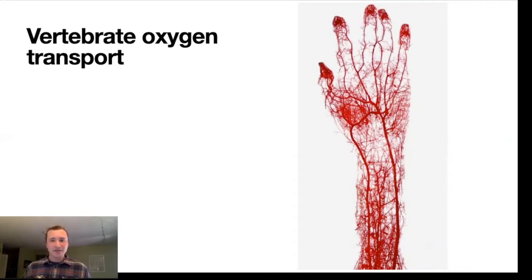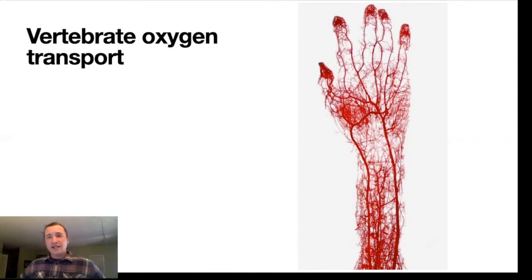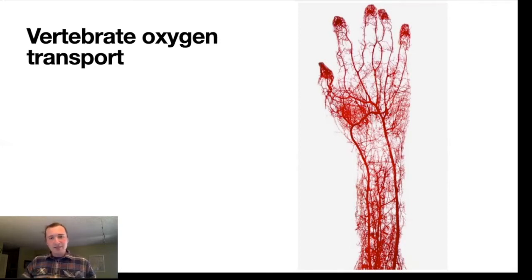Cells need to perform cellular maintenance and do the work of cells constantly. Insects and vertebrates both accomplish the task of getting oxygen to their cells, but they have different solutions. As a vertebrate, when we take in air into our lungs, we are bringing oxygen into contact with red blood cells. That oxygen is absorbed onto the red blood cells, binds to hemoglobin, and then our heart pumps that oxygen-laden blood through our bodies.